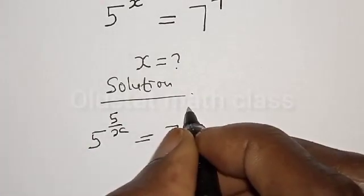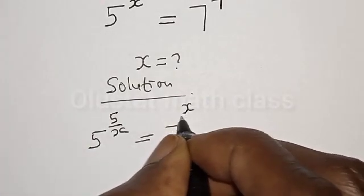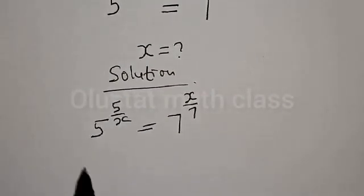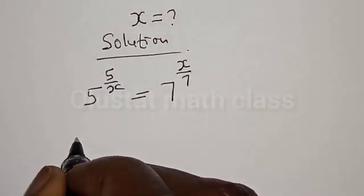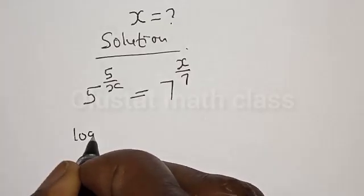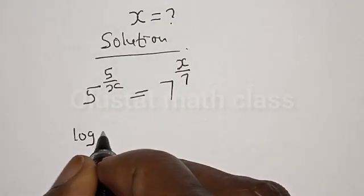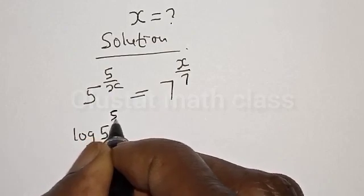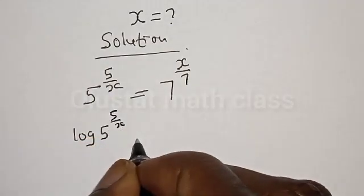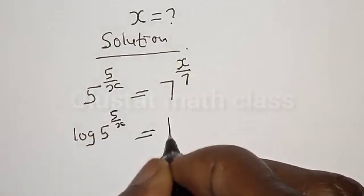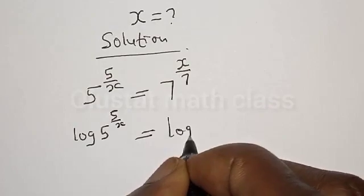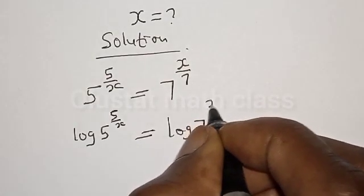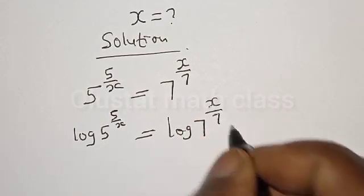Now what we do — let's take the log of both sides. We have log of 5 raised to power 5 divided by x is equal to log of 7 raised to power x divided by 7.